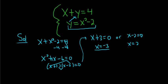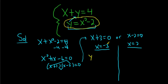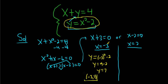Now for each x, we have to find the y value. So for x equals negative 3, we're going to plug it in to find y. We'll use this equation because it seems to be the easiest one. So you get y equals negative 3 squared minus 2, which gives y equals 9 minus 2, so y is 7. Our first ordered pair is negative 3 comma 7.